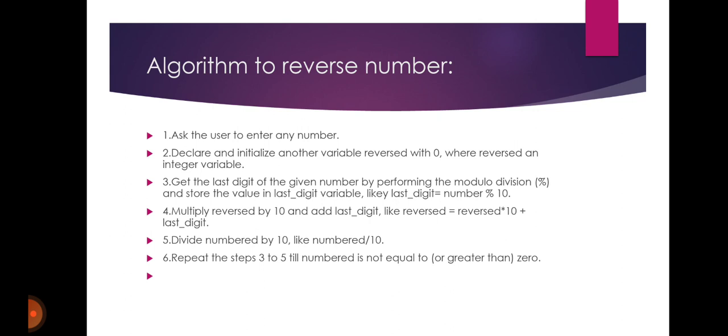Next, divide the number by 10. Repeat steps 3 to 5 until the number is not equal to or greater than 0. By following this algorithm, we write the code and flowchart to execute the program. If you follow the algorithm step by step, you will get the correct output.